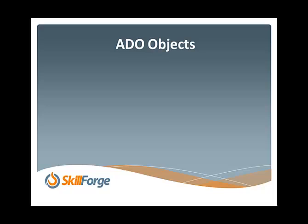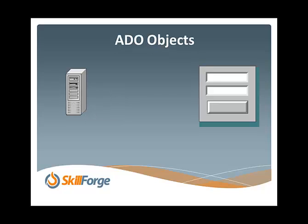To do that we're going to be using three main objects from the ADO object library: the connection object, the command object, and the record set object. To get a good overview of how these objects work, we'll look at a quick example. Our data is on the left in the database, we want to populate a form on the right with that data, and we'll need to use those three objects.